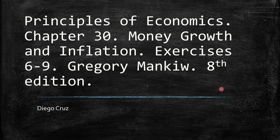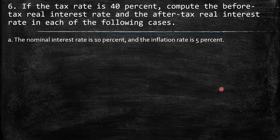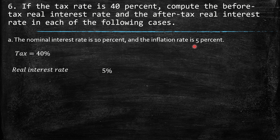Question 6: If the tax rate is 40%, compute the before-tax real interest rate and the after-tax real interest rate in each of the following cases. Case A: the nominal interest rate is 10% and the inflation rate is 5%. First, the tax provided by the exercise is 40%. The real interest rate should be exactly equal to 5%, which is 10% nominal minus 5% inflation rate. This gives us the real interest rate. We know the inflation rate is 5%.